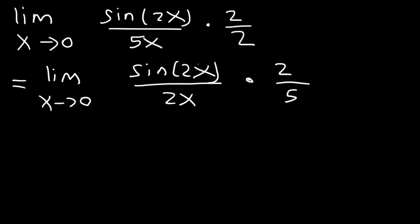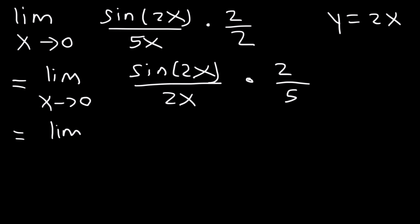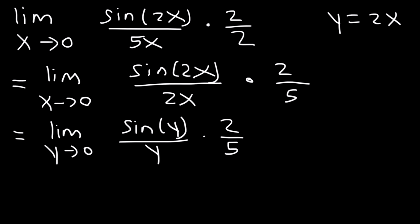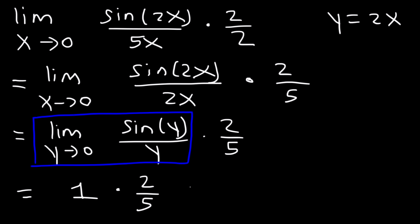Once these two values are the same, you can use substitution. Let y equal 2x. So we change the expression to the limit as y approaches 0 of sine y divided by y, times 2 over 5. Using the identity where the limit as x approaches 0 of sine x divided by x is 1, the blue expression is also 1. So our final answer is 2 divided by 5.